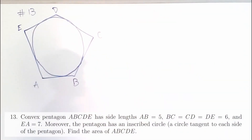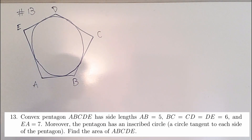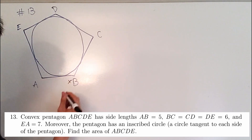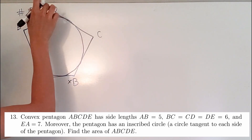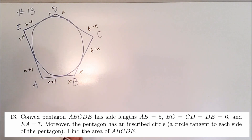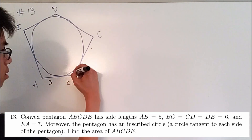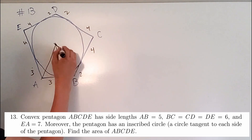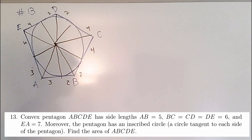Number thirteen. With any geometry problem we start by drawing the diagram — don't worry about my messy drawing. When you're given a polygon with an inscribed circle and you know the side lengths, you can determine the tangent lengths. Assigning x to one tangent and tracing it around the circle, we find x equals 2. Then we draw lines to the center of the circle.